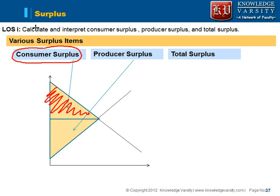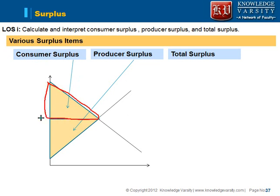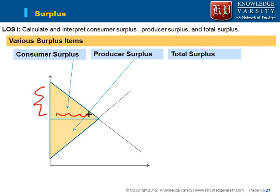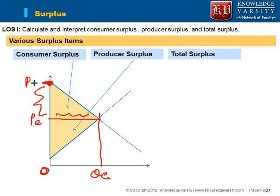Now we will see how to compute, because the LOS is asking you to compute. The computation is pretty simple — you have to find out the area of this triangle. Since this is a right angle triangle, it will be half times base times height. This is your base and this is your height. The base would be exactly your equilibrium quantity, and the height is found from the demand curve at quantity zero, giving us the price at that point and the difference.